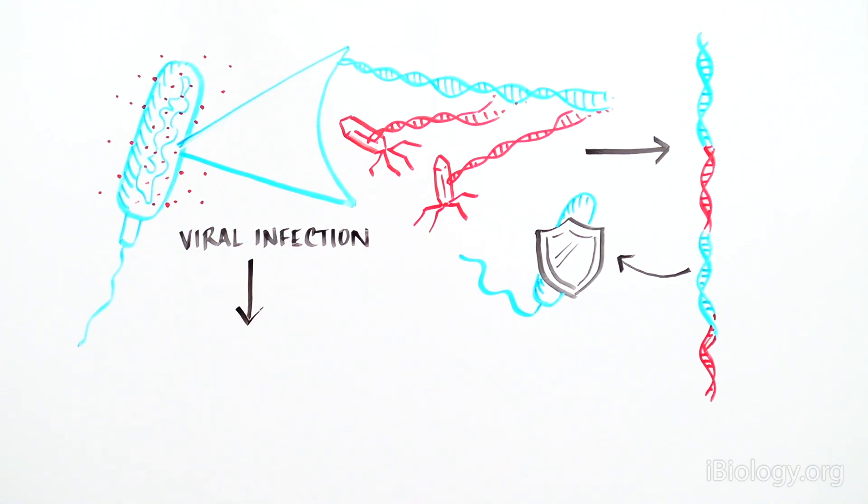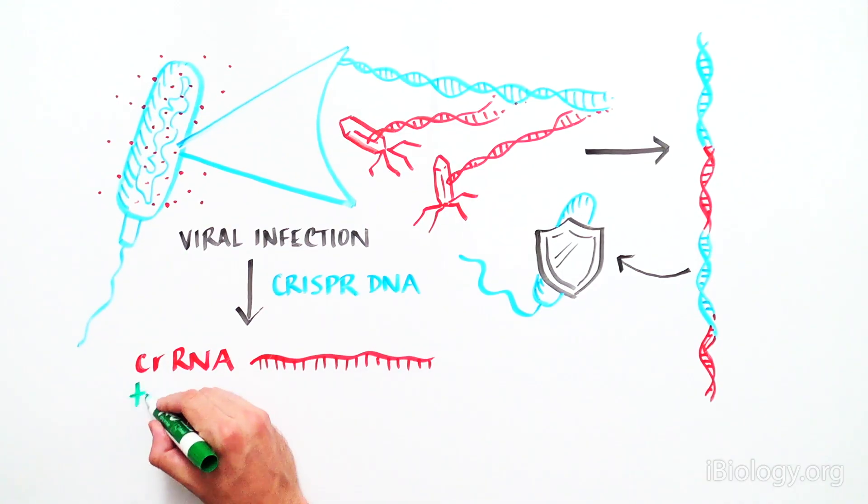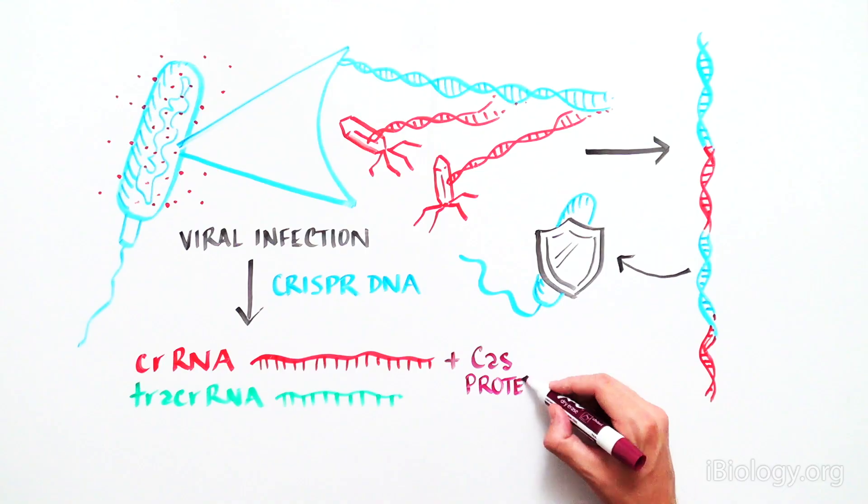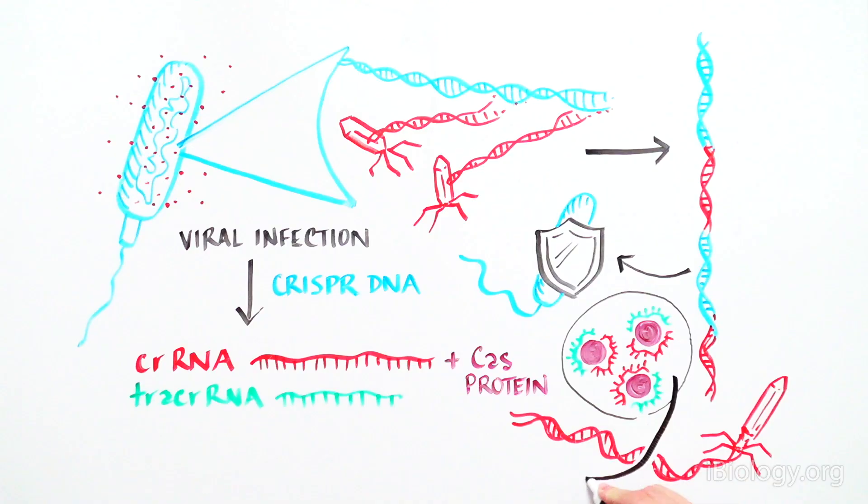Scientists observed that when a virus invades a bacterium, the CRISPR DNA produces one or two small RNAs called CRRNA and tracer RNA. These RNAs bound to Cas proteins and formed complexes that cut the DNA of the invading virus, thus protecting the bacteria from infection.